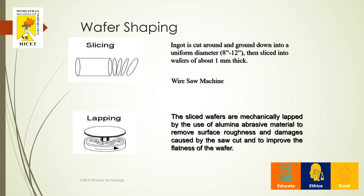The next part is wafer shaping, which has two major types: slicing and lapping. In slicing, the ingot is cut down to a uniform diameter and sliced to about 1 mm thickness. In lapping, the sliced wafers are mechanically lapped using an alumina material to remove surface roughness, so that any damage caused by the previous step can be corrected and the flatness of the wafer is improved.